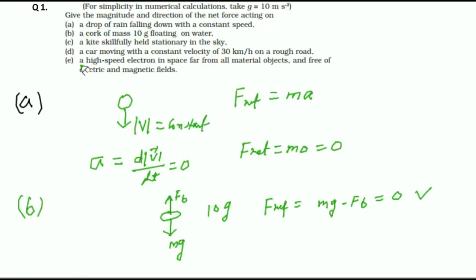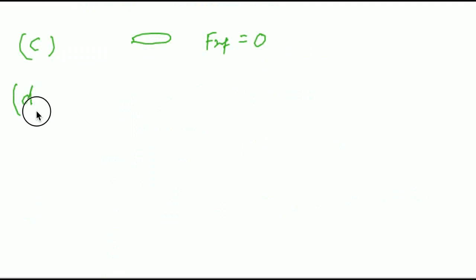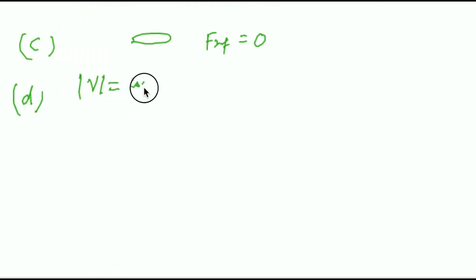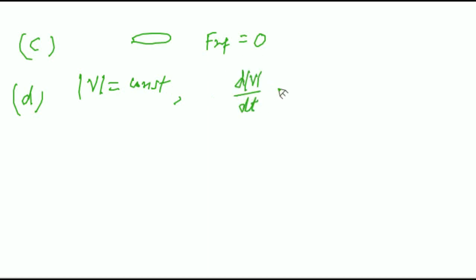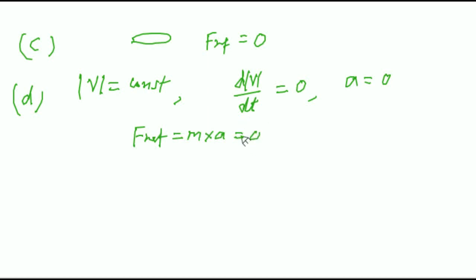Part D: a car moving with constant velocity 30 kilometer per hour on a rough road. Here again, given constant velocity. V equals constant, so dV by dt equals 0. If acceleration is 0, net force will be mass into acceleration, that is 0 again.